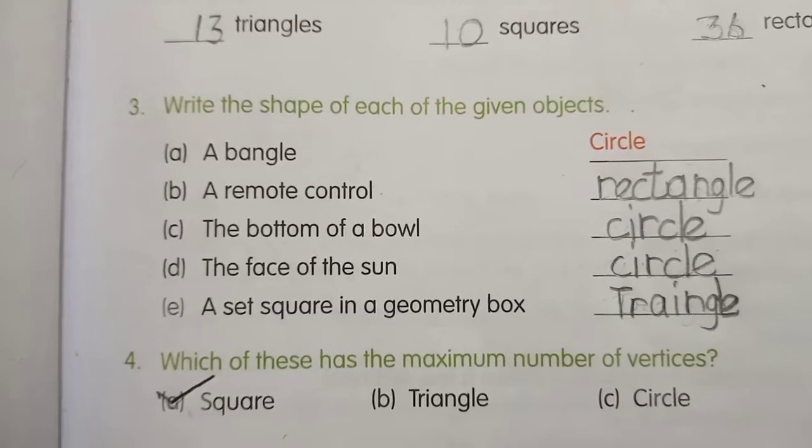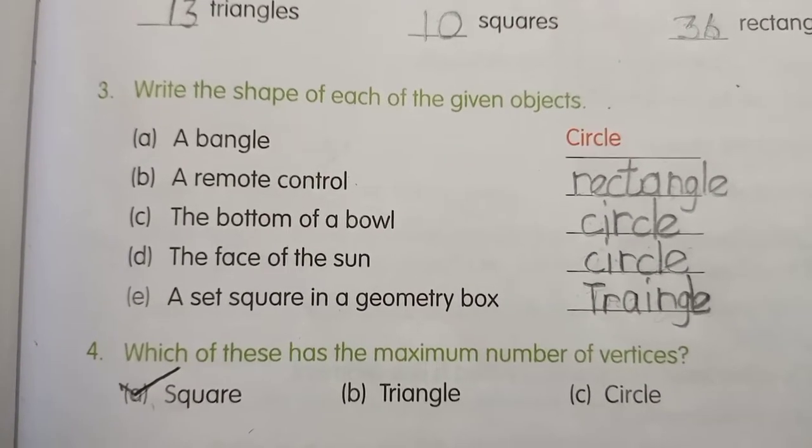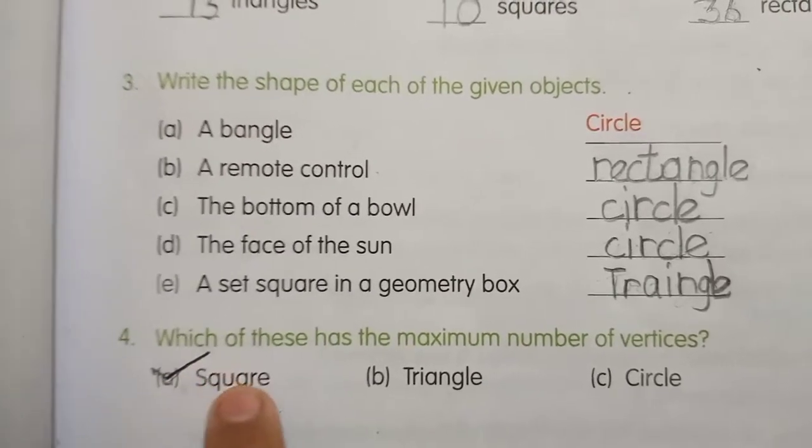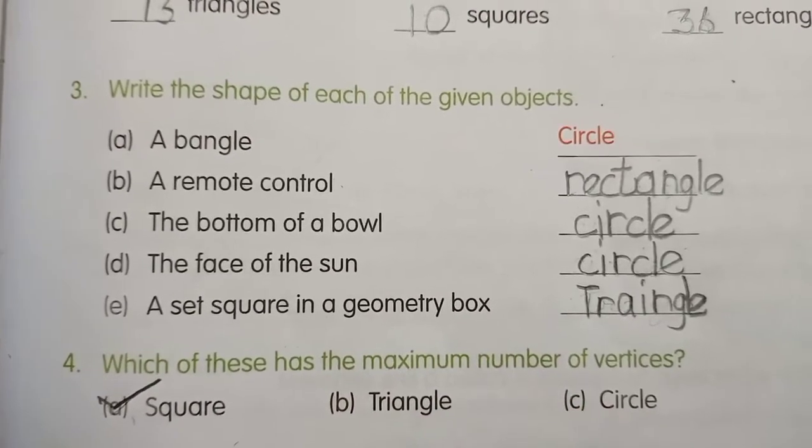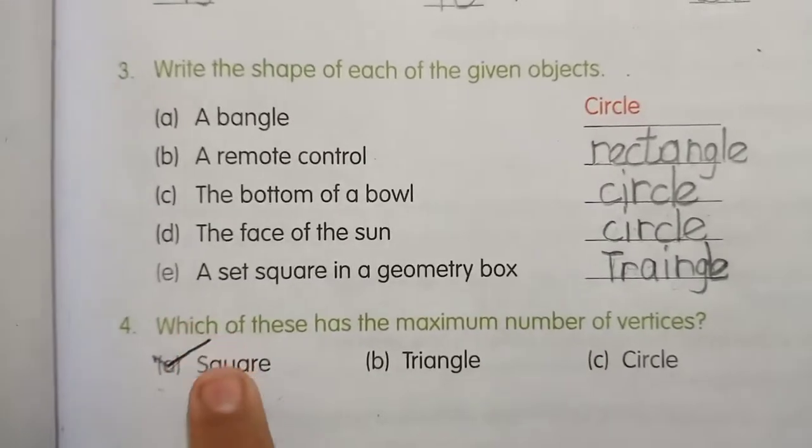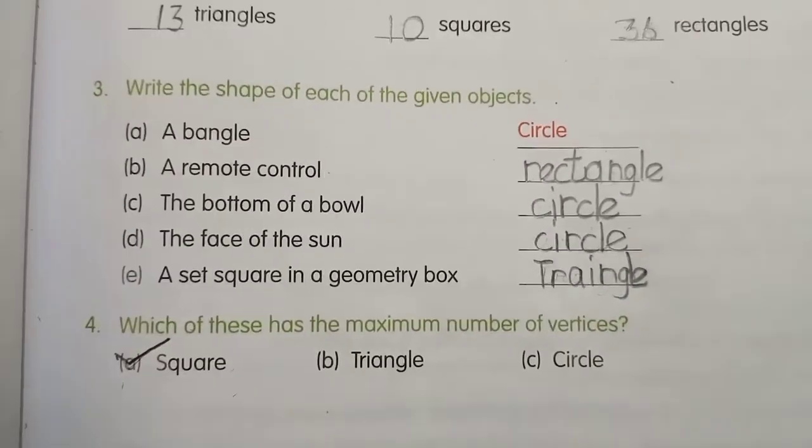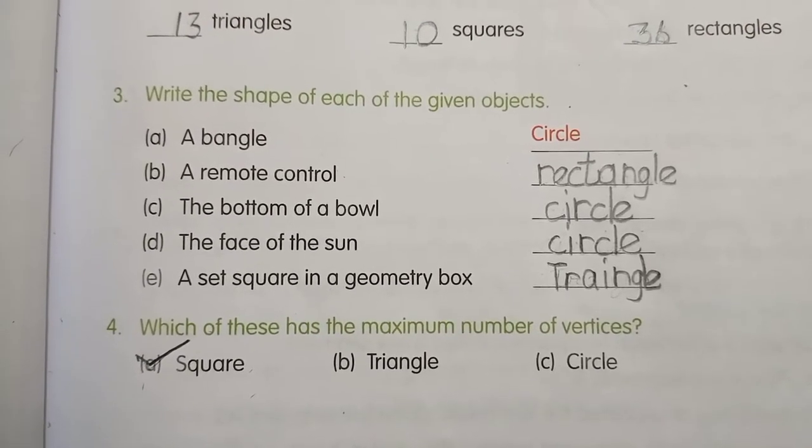Question number 4: which of these has the maximum number of vertices? A. Square, B. Triangle, C. Circle. Square has 4, triangle has 3, and circle has 0. The answer is A, square, because square has 4 vertices. Thanks for watching, thank you.